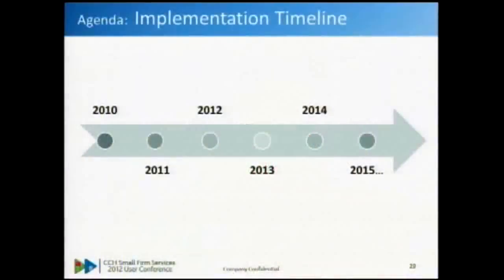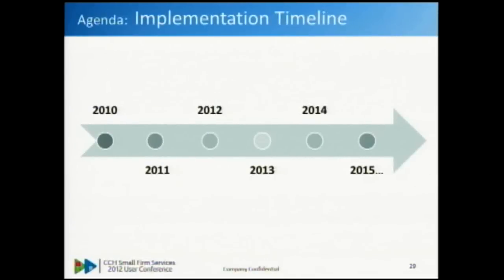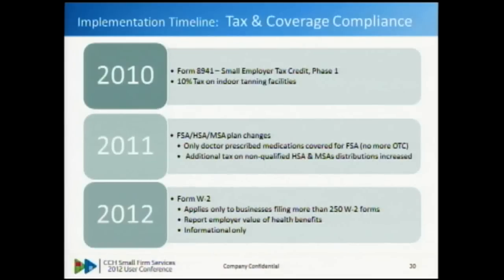So with that, here we go. We will take a quick look at the timeline retroactive through 2015, because some of those components are still rolling out and still have some applicability that may not have been executed on. In 2010, we had the rollout of Form 8941, the small employer tax credit - probably the biggest one that we hit, and we'll cover that one quite a bit more.